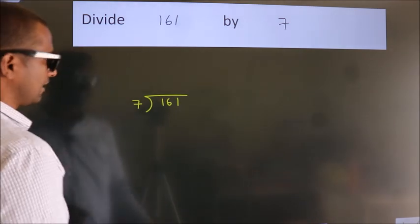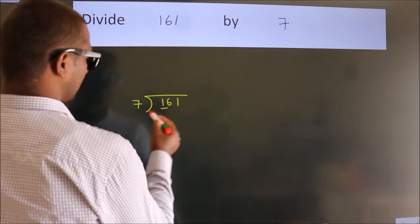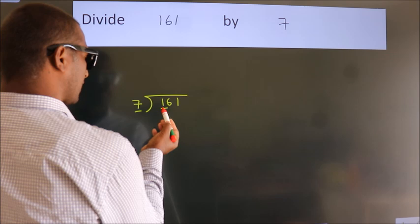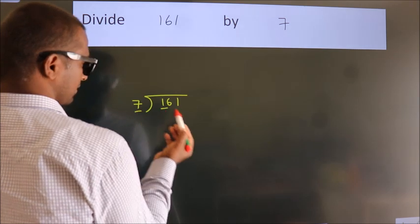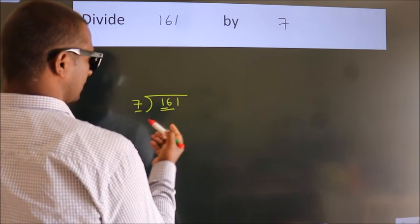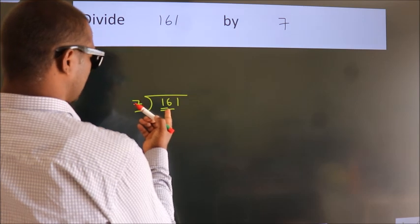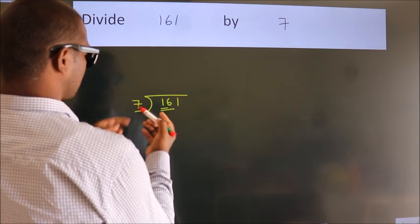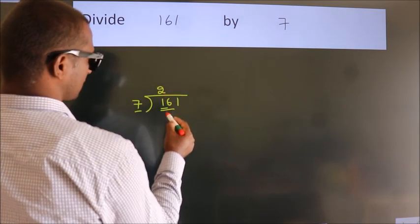Next. Here we have 1, here 7. 1 is smaller than 7, so we should take two numbers, 16. A number close to 16 in the 7 table is 7 twos, 14.